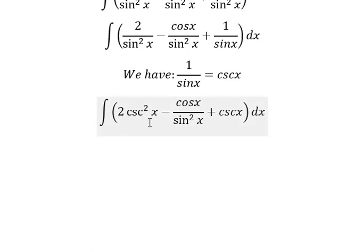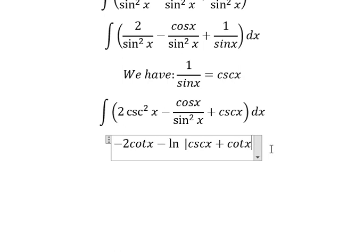So the integration of this one is negative cotangent of x. The integration of this one, we have negative ln of the absolute value of cosecant of x and cotangent x. And now we need to focus on this one.